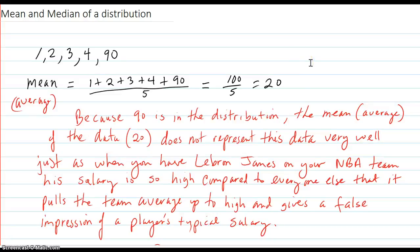Let's talk about the mean and median of a distribution. So first let's talk about a simple example. Here are some five numbers here, values.